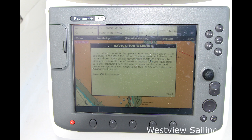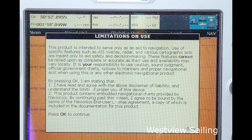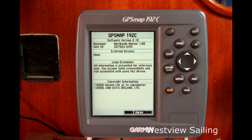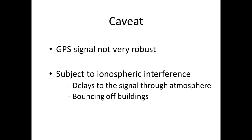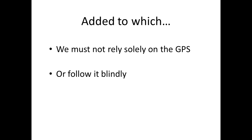Step one before we go anywhere with the chart plotter, especially with standalone units as opposed to apps, is that you'll have to agree to their caveat. They want you to know that as skipper you're taking responsibility for your actions. It's not entirely a legal thing, although it does absolve them from liability. The GPS signal is not very robust and is subject to ionospheric interference and delays as it passes through the atmosphere. We must not rely solely on GPS or follow it blindly — we should always back it up with a paper plot. This is part of why all chart plotters ask you to agree to the terms at startup.